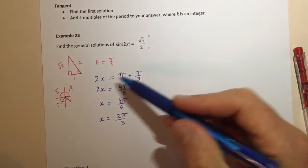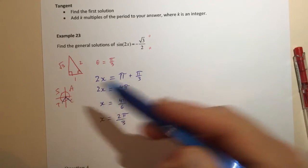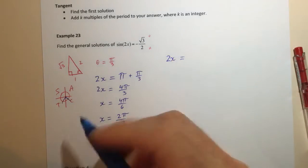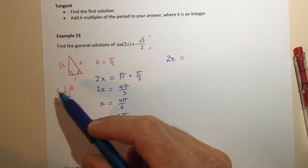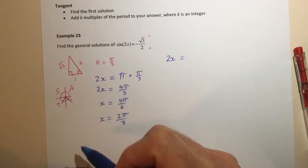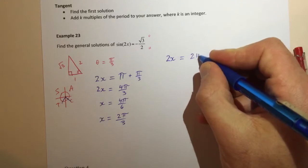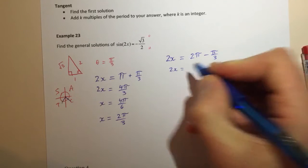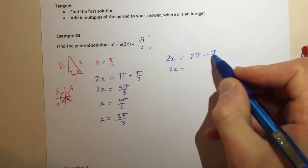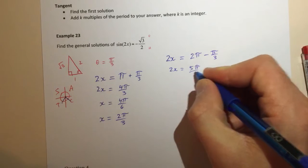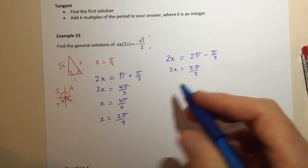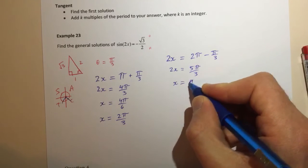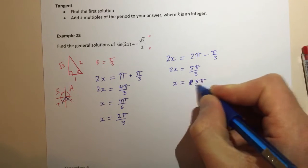Okay so that was an answer that we got from using the third quadrant. We now use the answer in the fourth quadrant which is to say that the angle which is 2x must equal well 2π - π/3, and so 2x will equal 6π/3 - 1π/3 so that's 5π/3, and dividing both sides by 2 gives me, oops, 5π/6.